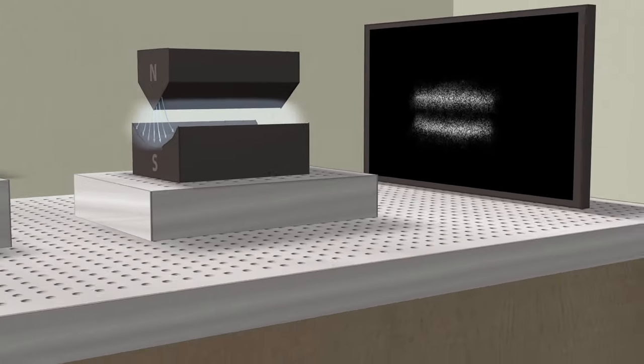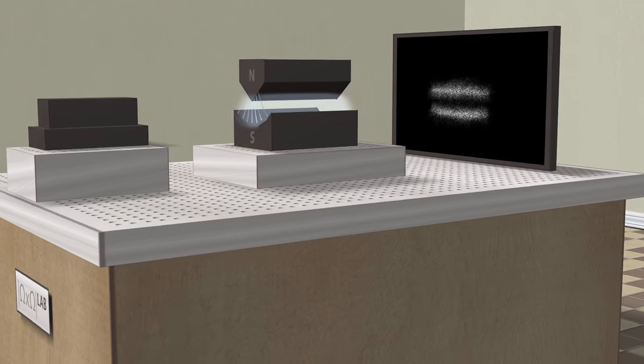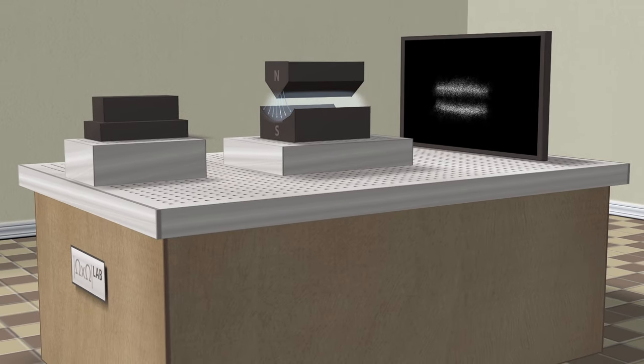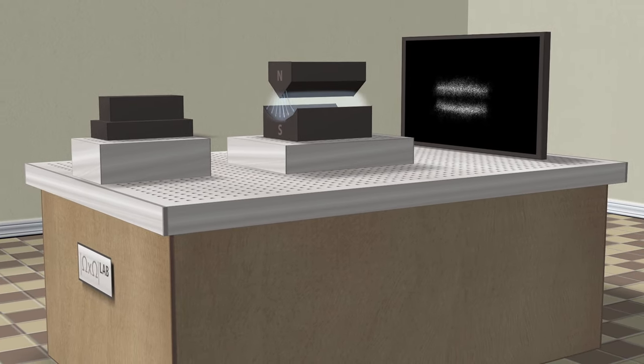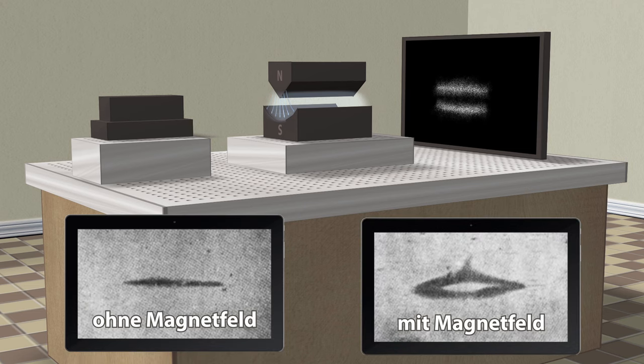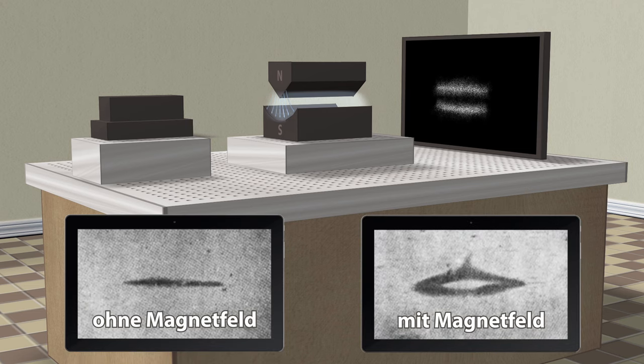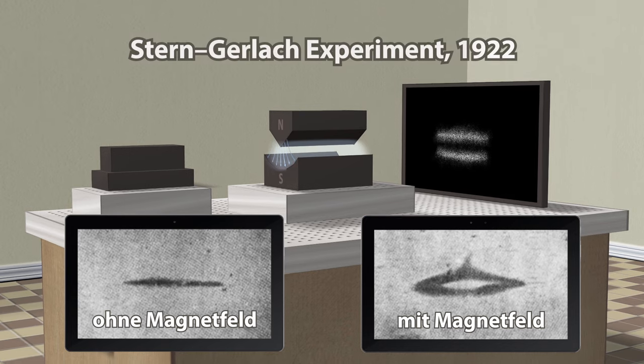When performing their canonical experiment, Stern and Gerlach were unable to use single silver atoms. Therefore, they could not demonstrate the role of chance in each experiment. However, they were the first to demonstrate that the spin is quantized, or separated, in up and down. It was a sensational achievement in their time.